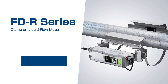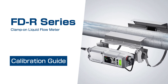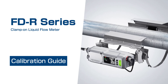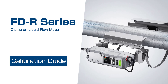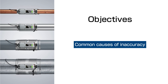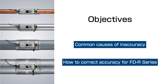Welcome to this video, which will guide you through correcting the detection accuracy of the flow rate value for the FDR series of clamp-on ultrasonic flow meters. The objectives for this video are to introduce the common causes of detection inaccuracy for ultrasonic clamp-on flow meters, and then discuss how correcting the detection accuracy is easy to do for the FDR series.